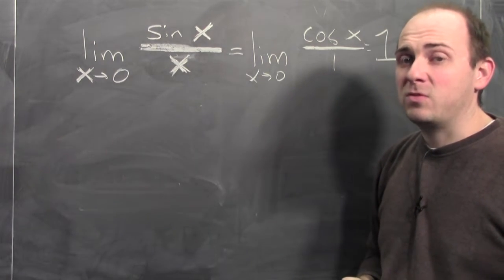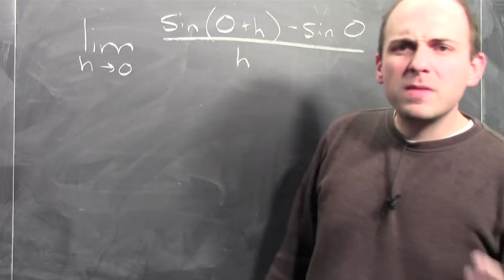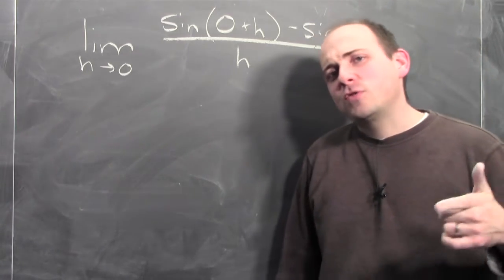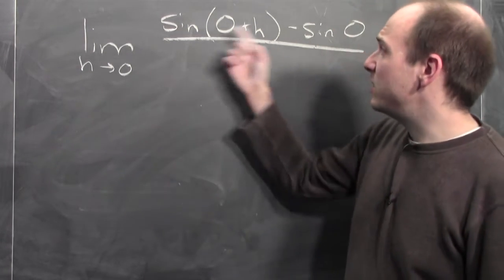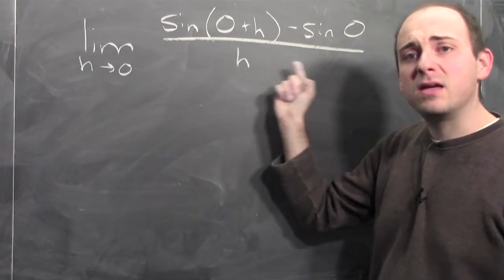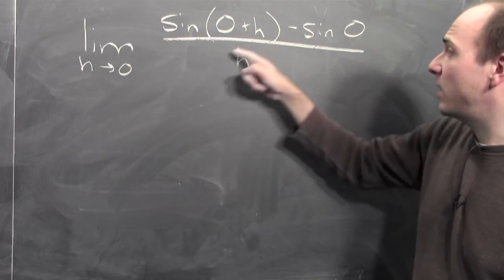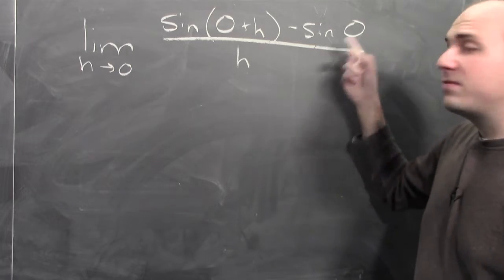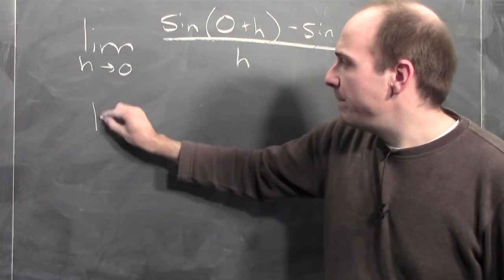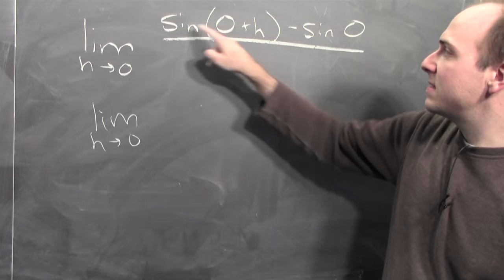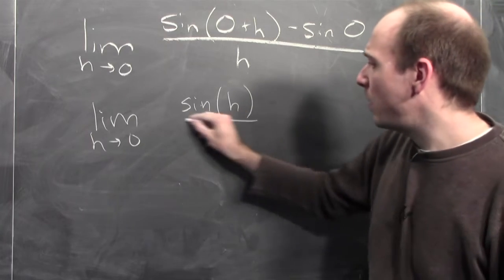How did you know the derivative of sine x was cosine x? Taking a derivative is the same thing as a limit of a difference quotient. So to calculate the derivative of sine at zero, I take a limit like this: the limit as h goes to zero of sine(0 + h) minus sine(0) over h. Sine of zero is just zero, so calculating this limit — which is calculating the derivative of sine at zero — is really the same as calculating the limit as h goes to zero of sine h over h.